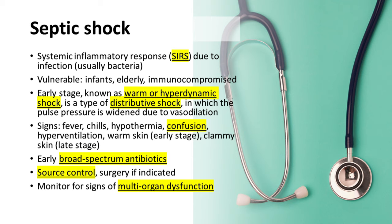Early recognition and management of sepsis may prevent progression to septic shock. Swift administration of broad-spectrum antibiotics is pivotal while awaiting culture results. Identify the source of infection and treat it with surgery if indicated. Monitor patients closely for signs of multi-organ dysfunction, as septic shock can lead to organ failure.